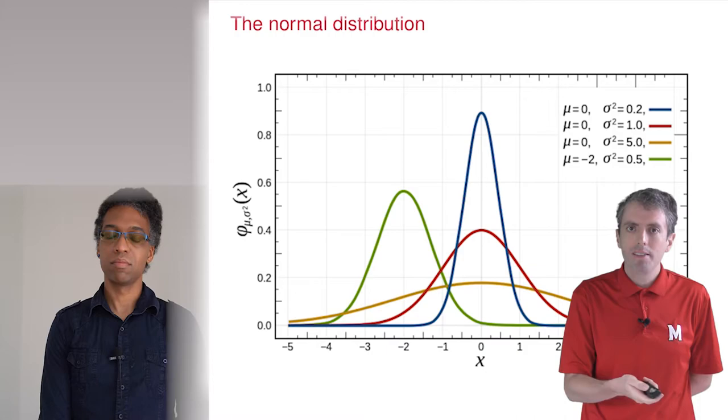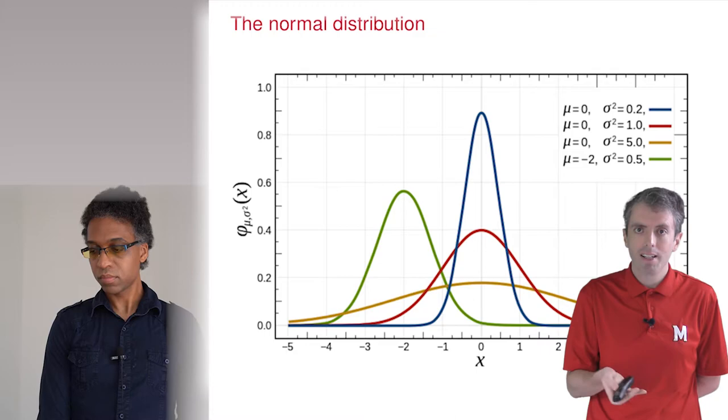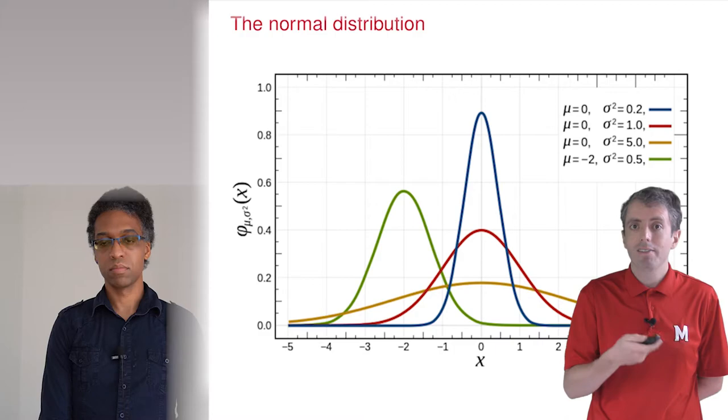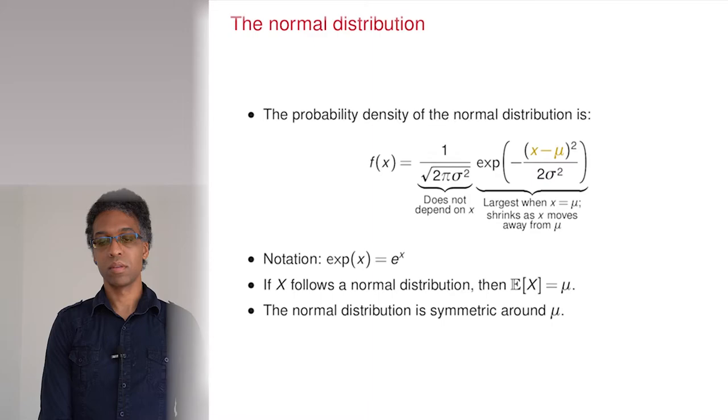Right. The mean is usually called mu, and the variance is usually called sigma. The bigger the variance is, the more spread out the bell is. For the moment, let's just say that the variance is 1, and when we do that, it disappears from the equation.